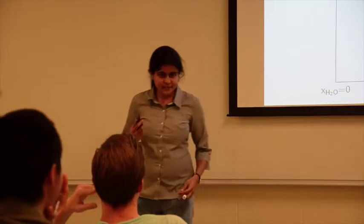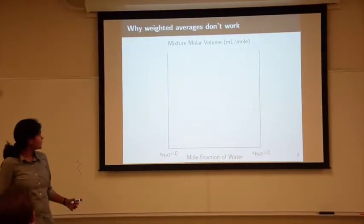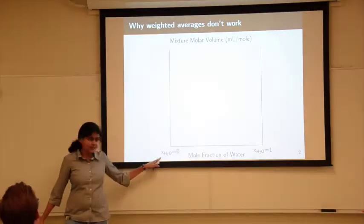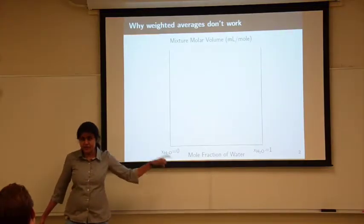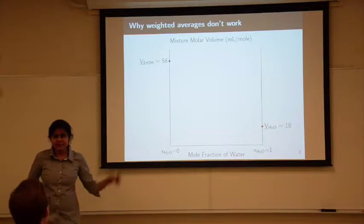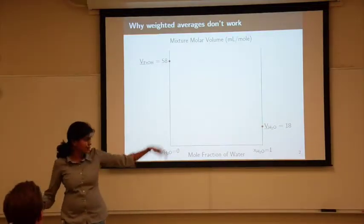Let's take a look at this graph showing the mixture molar volume as a function of composition. On the x-axis, you have the composition of water. On the y-axis, the molar volume of the mixture. On the left-hand side, 100% ethanol, 0% water. On the right-hand side, 0% ethanol and 100% water. At the extremes, you just have pure substances.